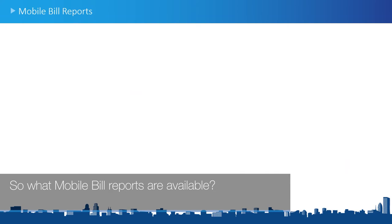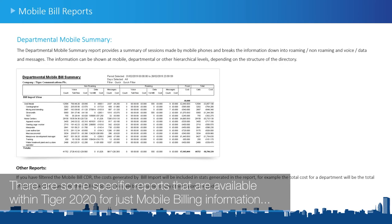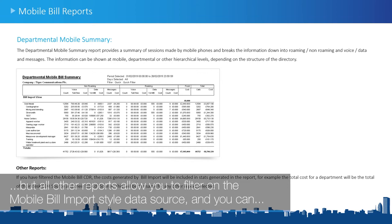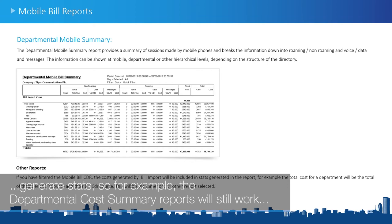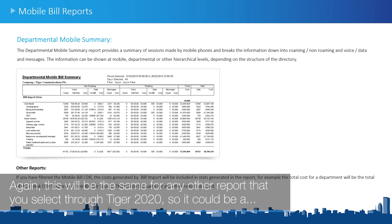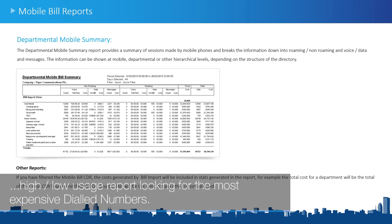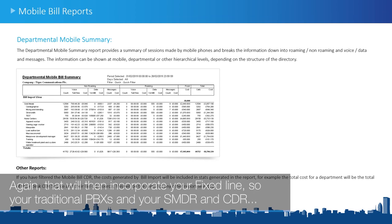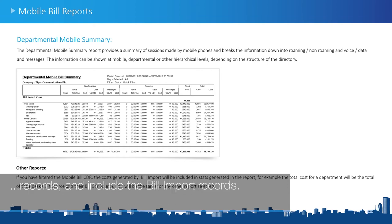What mobile bill reports are available? There are specific reports within Tiger 2020 for mobile billing information, but all other reports allow you to filter on the mobile bill import data source and generate stats. For example, the departmental cost summary report will still work and incorporate the bill CDR source. A high-low usage report looking for the most expensive dialed numbers will also incorporate your fixed-line PBX SMDR and CDR records alongside the bill import records.